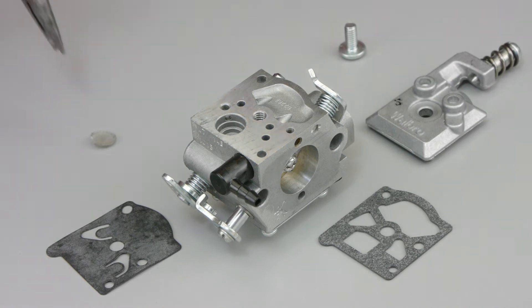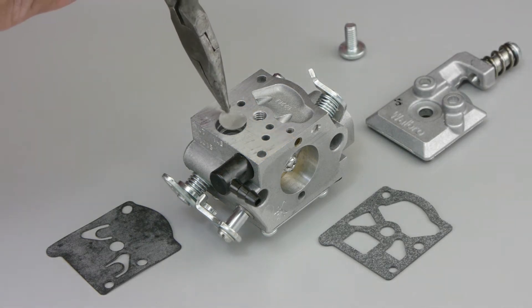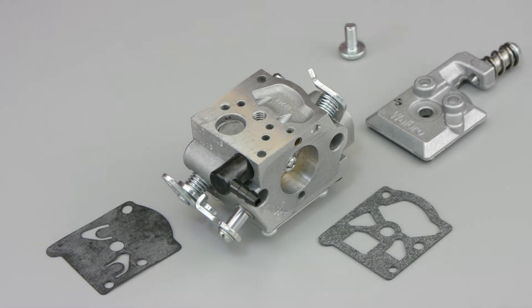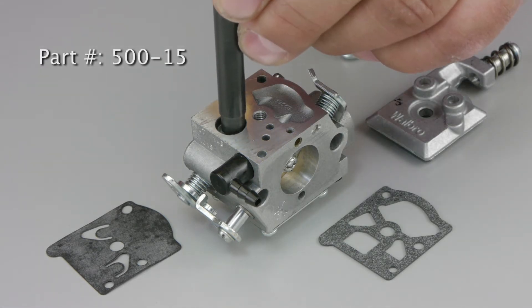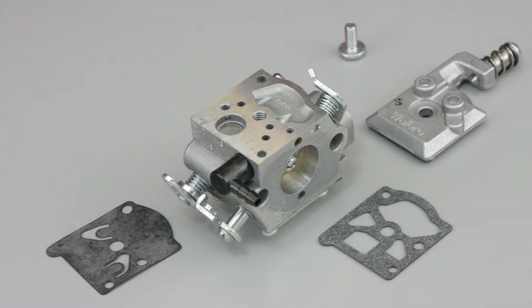Reassemble the fuel pump, beginning with a new fuel inlet screen. Fit the new screen into the screen pocket and press to the screen pocket step using Walbro tool number 500-15. The screen should completely contact the casting wall.